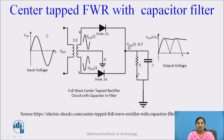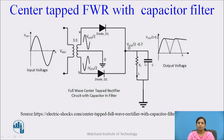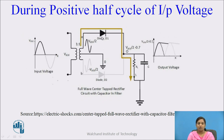Next, the center-tap full-wave rectifier with capacitor filter. The center-tap rectifier consists of a center-tap transformer. Here two diodes are used — diode D1 and diode D2 — both connected to the load RL. The change here is that the capacitor is placed across this load RL. In the positive half cycle of the input AC, diode D1 becomes forward biased and diode D2 is in reverse bias. So diode D1 acts as a closed switch and diode D2 acts as an open switch. Diode D1 conducts the current, which charges this capacitor.